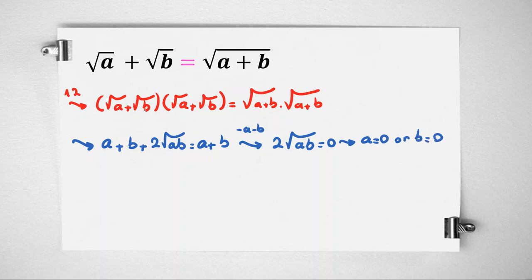And if we check in the main equation, for example, if a is 0, then left side is square root of b, right side is square root of b, so we found the condition.